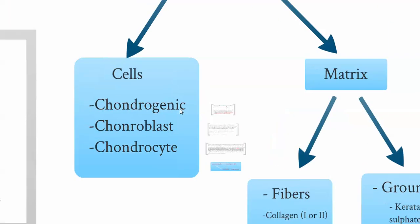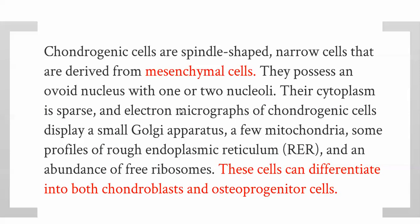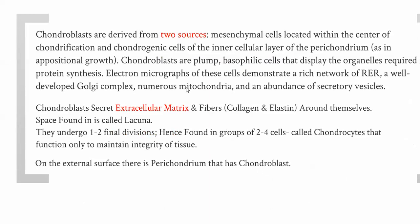Chondrogenic cells: there are two key points to remember. First, they are derived from mesenchymal cells. Second, they can differentiate into both chondroblasts and osteoprogenitor cells. The other information in the book about their appearance under the electron microscope is less critical — just know the two key points.